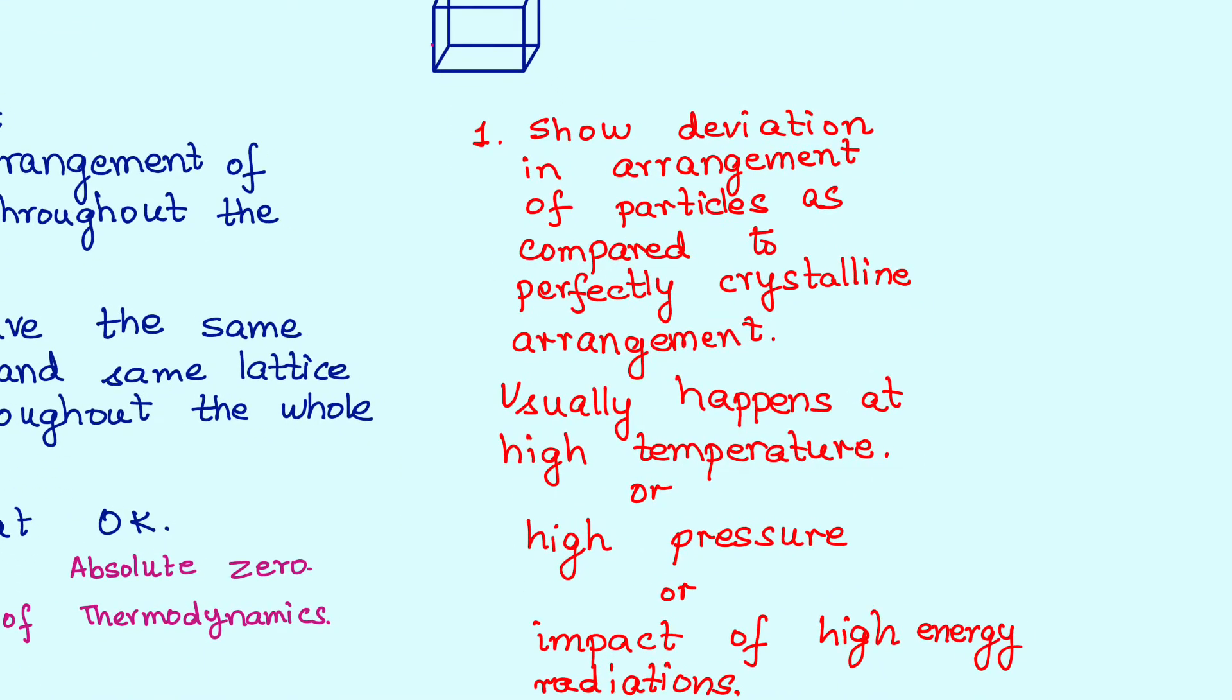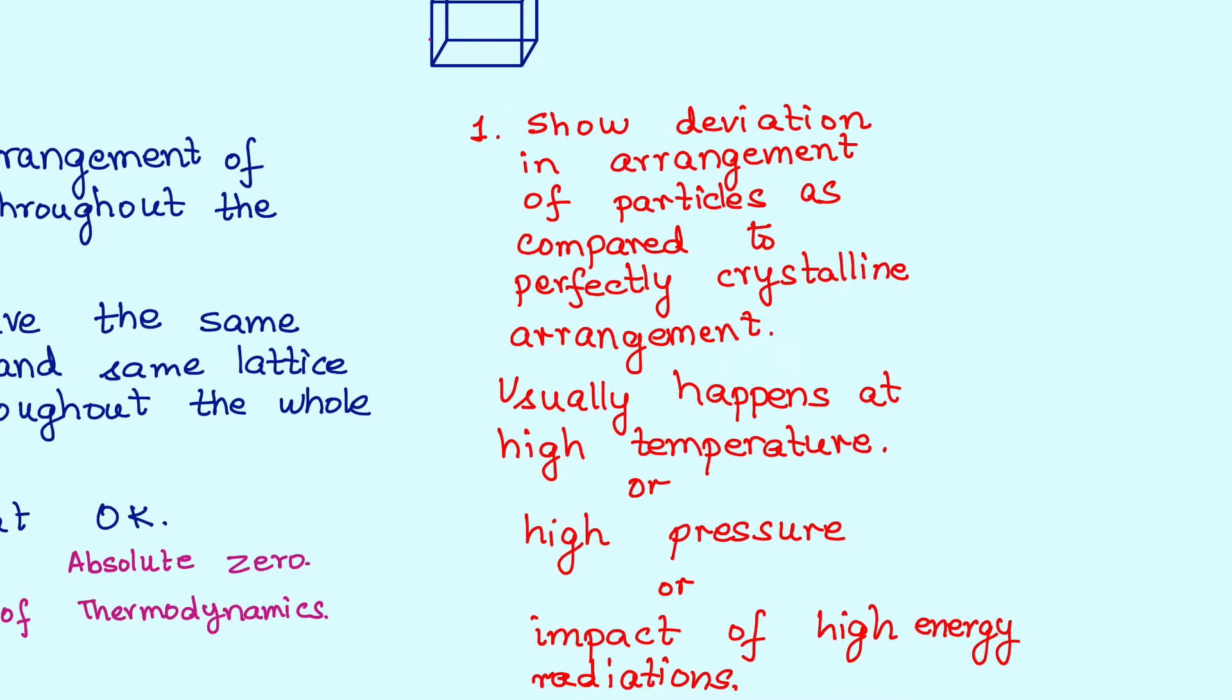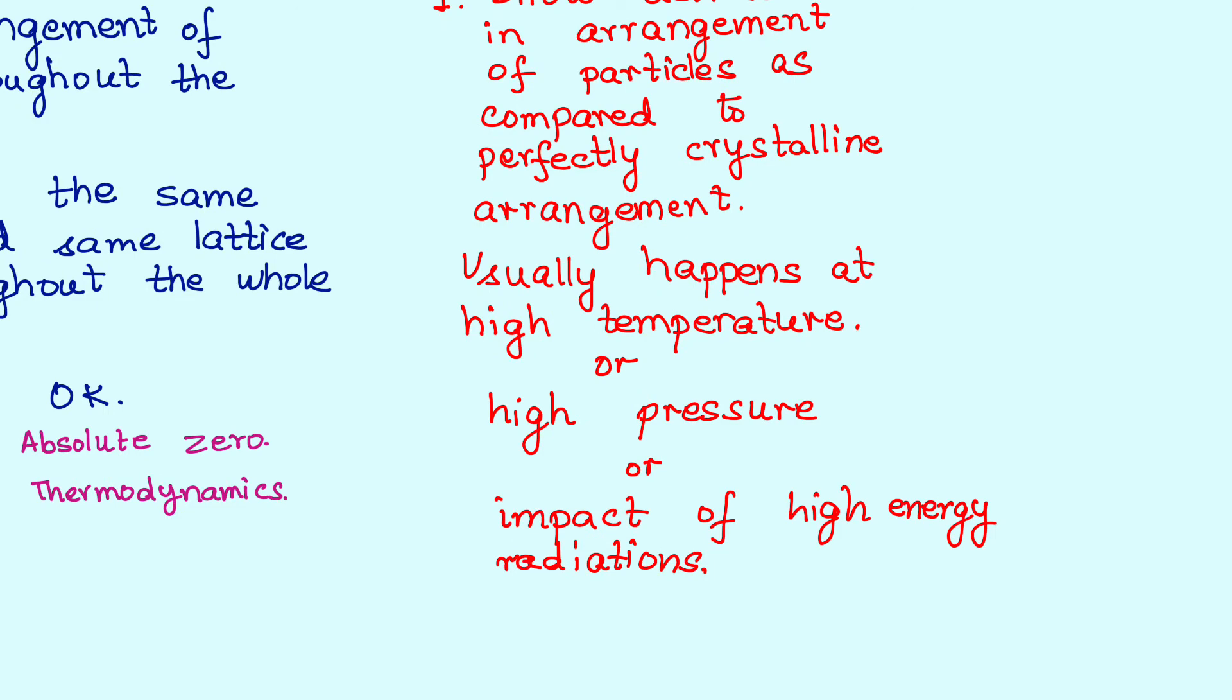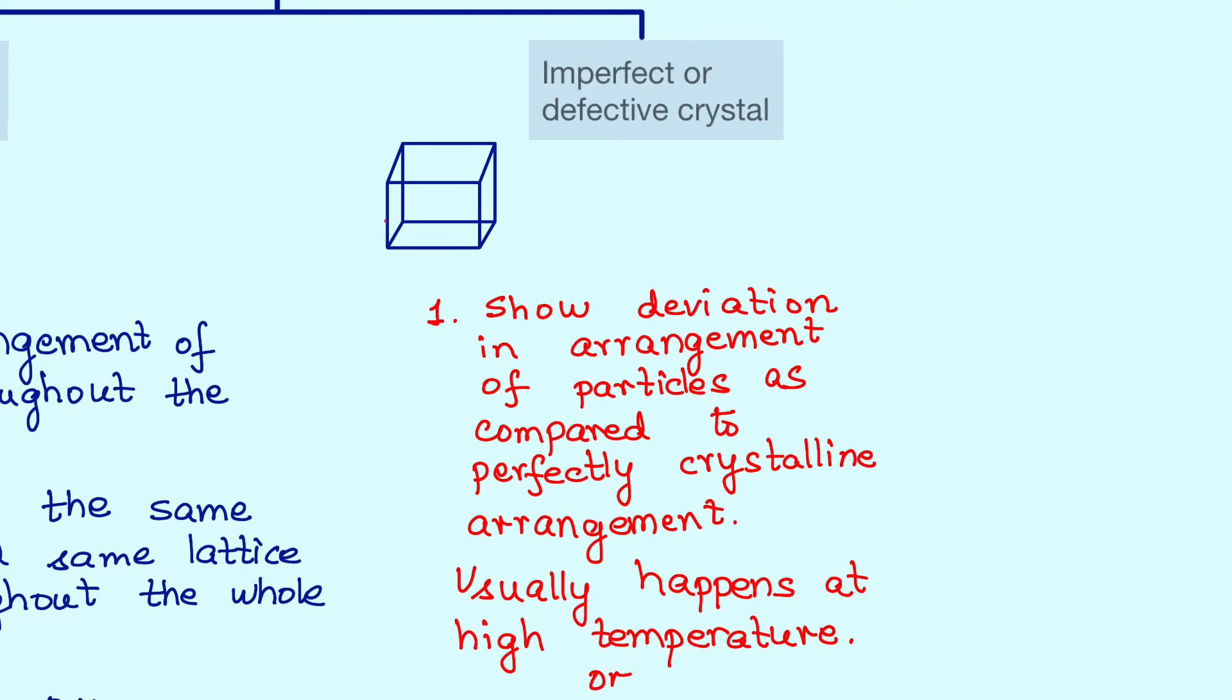That's what we have written as well, that is they show deviation in arrangement of particles as compared to perfectly crystalline arrangements. Now how do these deviations come about? There are many factors. In fact, in the case of crystals, we actually introduce these defects in the crystals for various uses. That's why this topic is very interesting to learn. In fact, the mobile on which you are watching this video is also based on these defects only. Can you think of how?